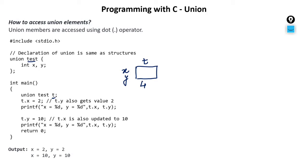Now, what we are doing is 't dot x'. How to access a member of union? Using the dot operator — just like we accessed members of a structure using dot operator. In a similar fashion, we can access members of a union by dot operator. So 't' is a variable, dot x refers to this element. t dot x is equal to 2, so the value 2 is stored there.